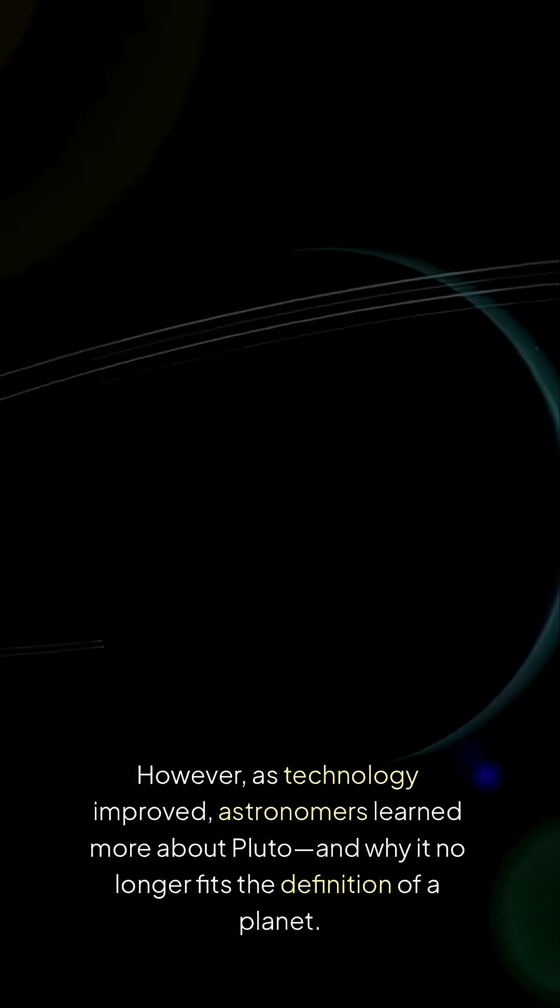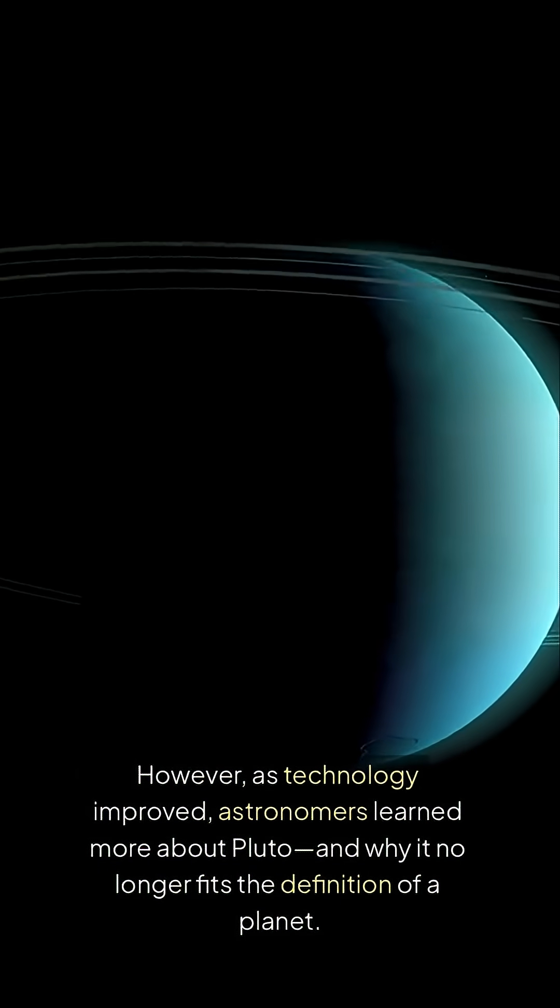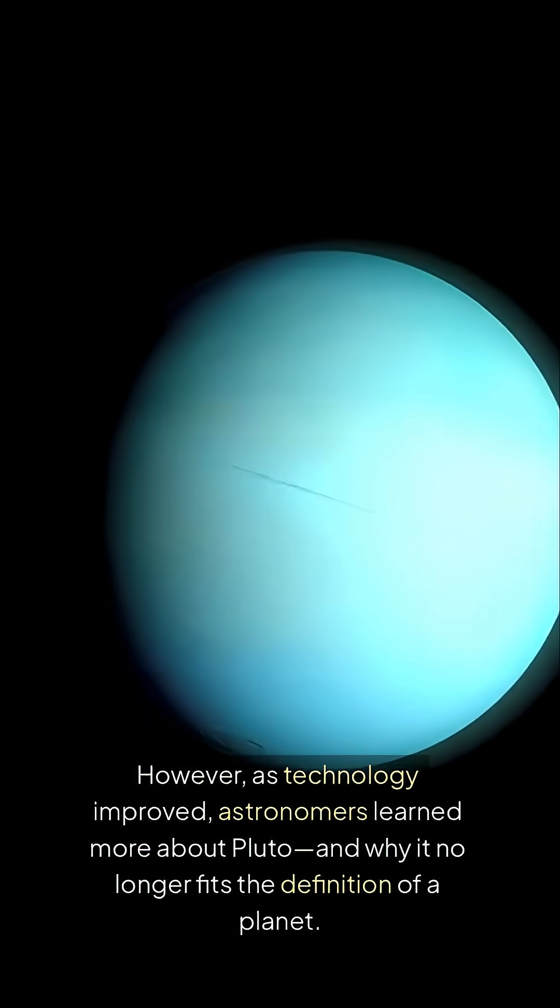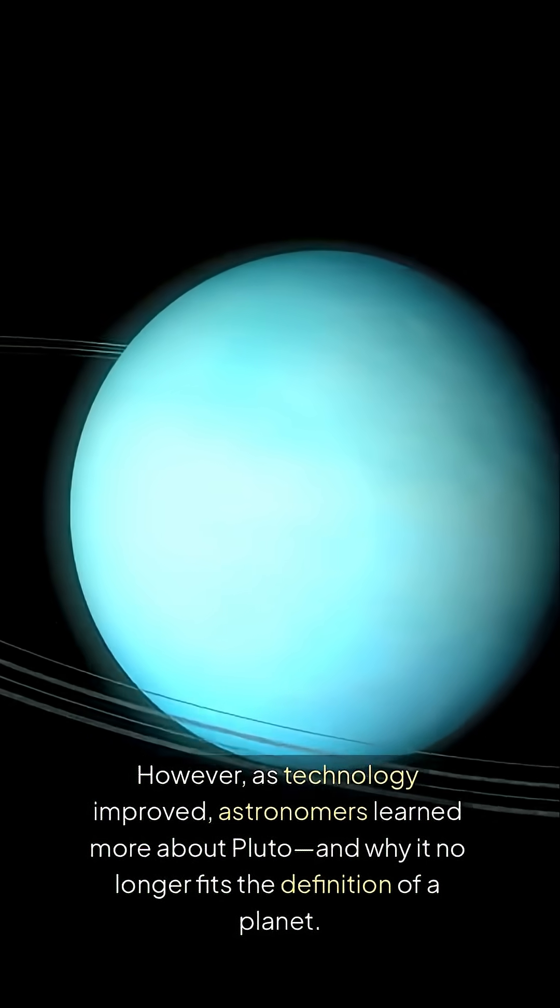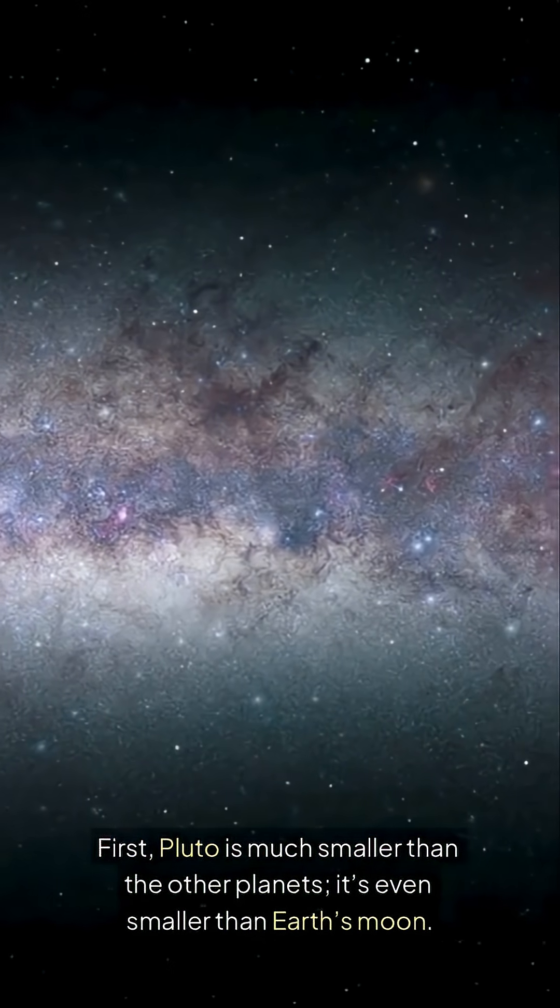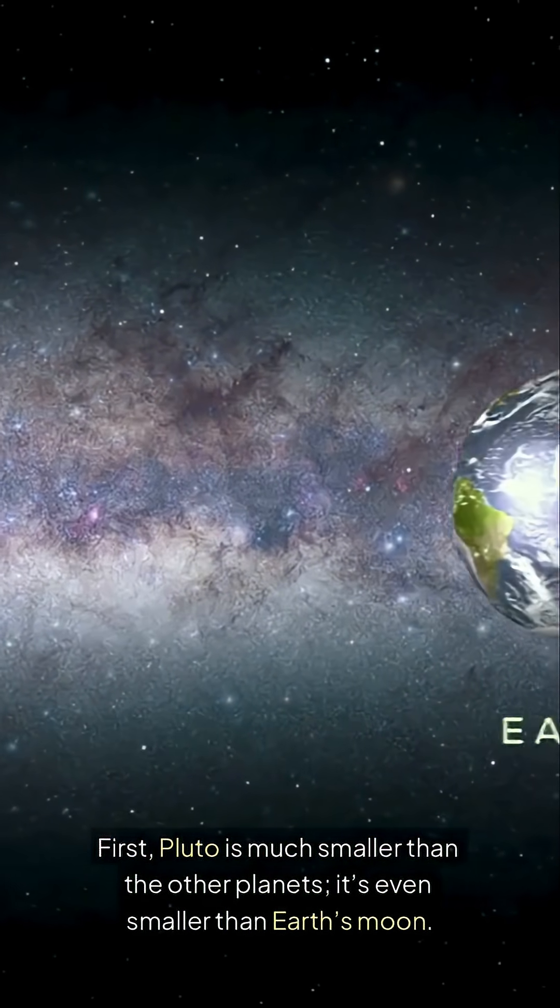However, as technology improved, astronomers learned more about Pluto and why it no longer fits the definition of a planet. First, Pluto is much smaller than the other planets—it's even smaller than Earth's moon.